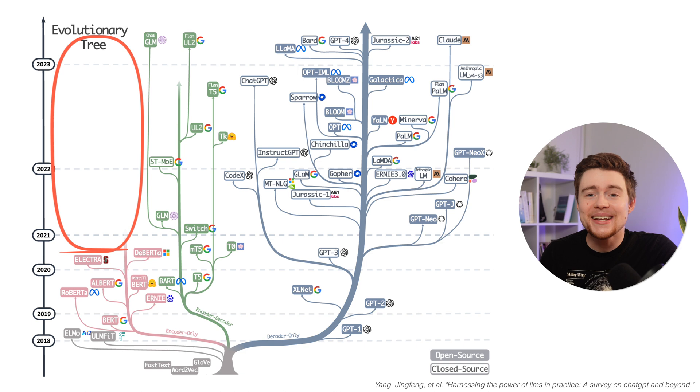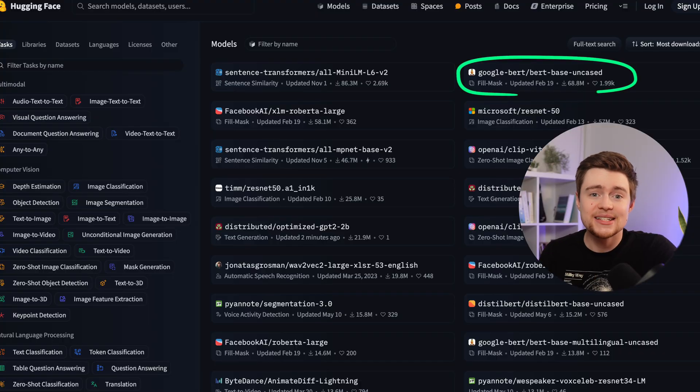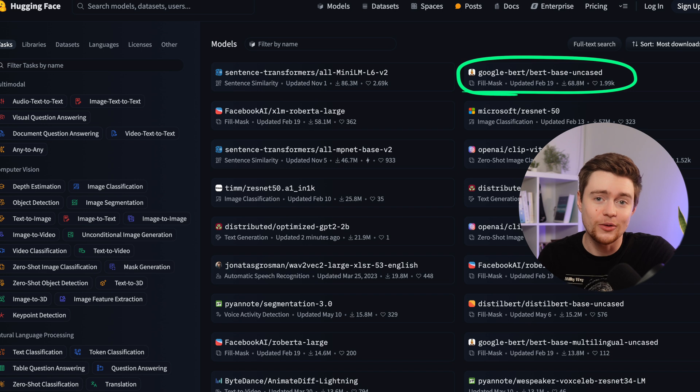Many systems and pipelines are currently based on rather old encoder models like BERT or RoBERTa. Here you can see that BERT is the second most popular model on Hugging Face with over 65 million downloads. On the one hand this is very impressive, but also BERT was published six years ago in 2018.